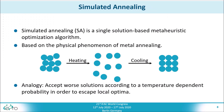The optimization is performed by simulated annealing, which is a single solution-based metaheuristic optimization algorithm. It is based on a physical phenomenon of metal annealing, in which a metal is first heated, resulting in a state of high energy where its atoms are allowed to move freely. After cooling, a state of minimum energy is reached. The analogy in the simulated annealing algorithm is the acceptance of worse solutions according to a temperature-dependent probability in order to escape local optima of the optimization problem.